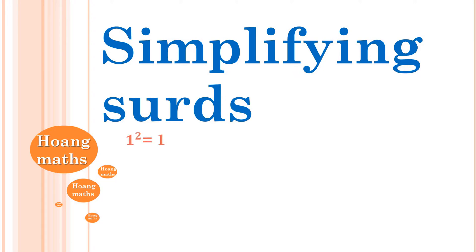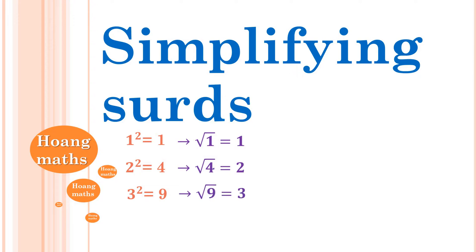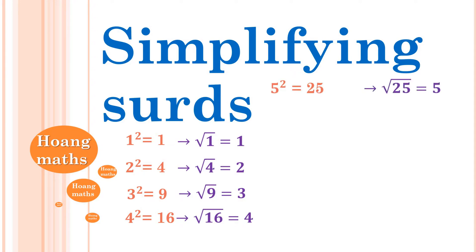So the first square number is 1, because 1 squared is 1, and square root of 1 is 1. 2 squared is 4, so square root 4 gives me 2. 3 squared is 9, so square root 9 is 3. 4 squared is 16, so square root 16 is 4. And 5 squared is 25, square root 25 is 5.